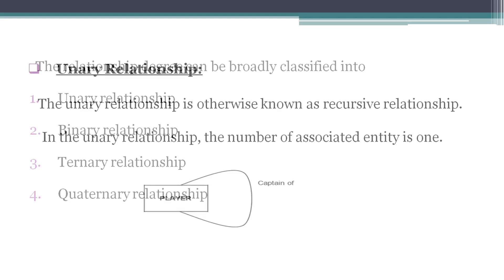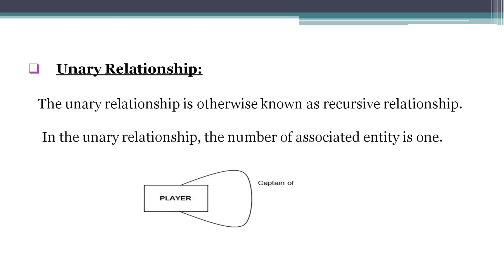First one: Unary Relationship. A unary relationship is also called a recursive relation. In a unary relationship, only one entity participates in the relationship. Such a relationship is called a unary relationship, also known as a recursive relation — where an entity has a relationship with itself.